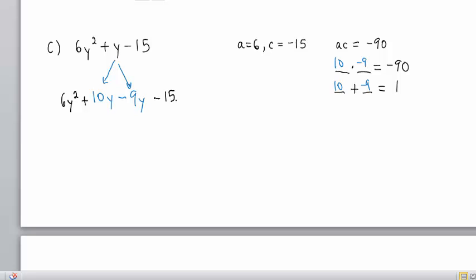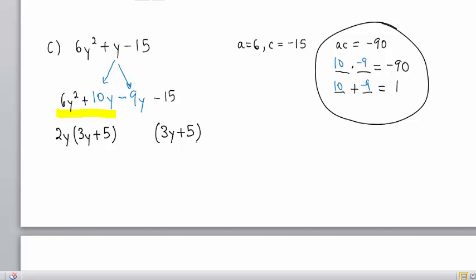Then we factor by grouping. Looking at the first two terms, the greatest common factor is 2y. We write 2y times the quantity 3y plus 5. The 3y plus 5 parenthetical factor will be repeated because we were able to successfully fill out this chart. So I write the 3y plus 5 first, knowing it will be there.